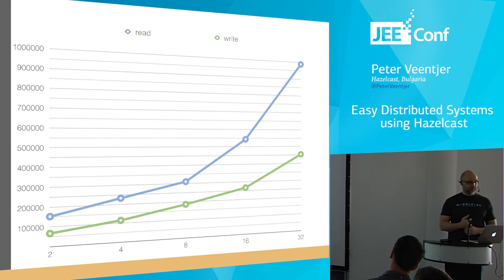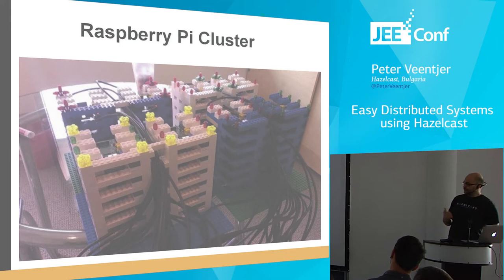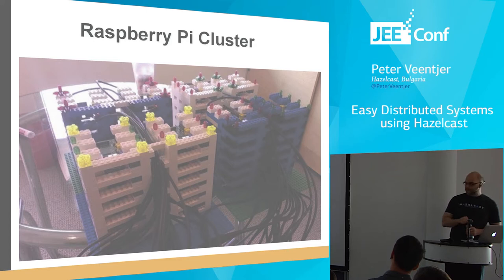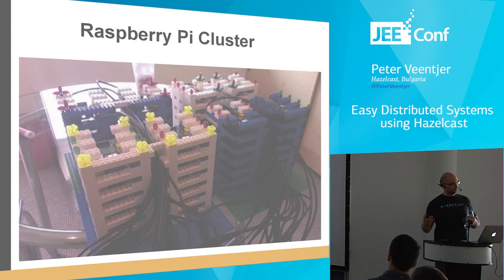This is an example we made for the JavaOne conference — a cluster of Raspberry Pi machines. Every Raspberry Pi has 512 megabytes of memory and a slow processor. But if you combine all these machines together, you have quite a lot. The cool thing is that with Hazelcast, it's very easy to combine the resources of all these little machines into a single big machine. Normally in production you would never use Raspberry Pi, but it shows you what you can do with it.